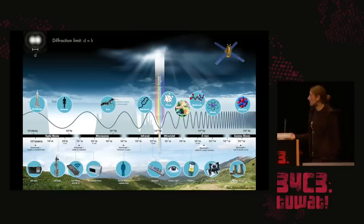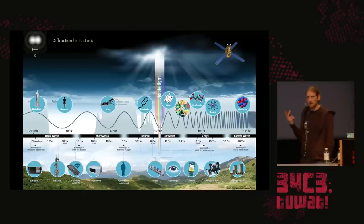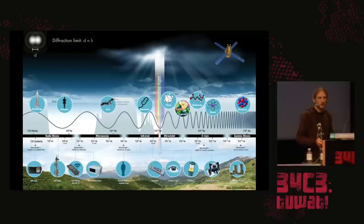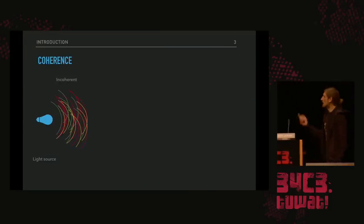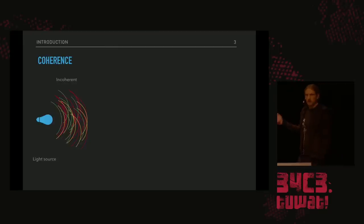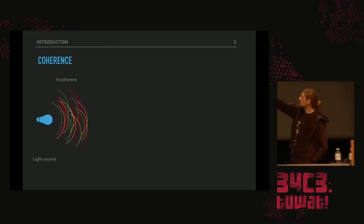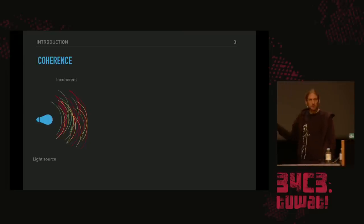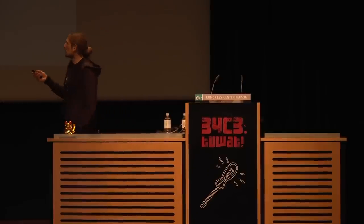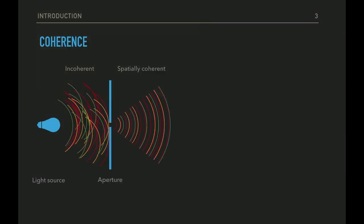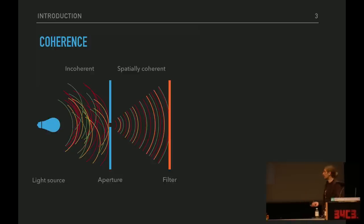Our way of making a picture of something that small is quite different from what you're used to with your eyes or camera. We do X-ray diffraction images. First, I have to tell you something about coherence. An ordinary light source emits light in different wavelengths with no fixed phase relation — this is incoherent light. If I place an aperture in, the wavefronts propagate as if emitted by a point source — this is spatially coherent light. Adding a filter that lets through only one particular wavelength gives us coherent light.